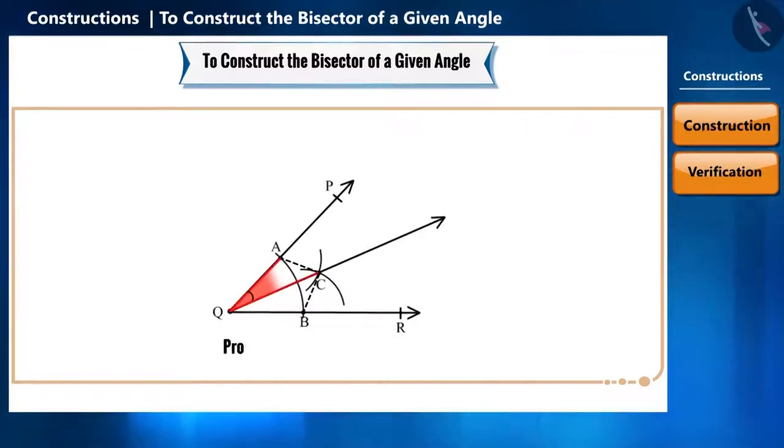We have to prove that angle AQC is equal to angle BQC. If we prove that triangle AQC and triangle BQC are congruent, then we know that the corresponding parts of congruent triangles are equal, which means their corresponding angles will also be equal.